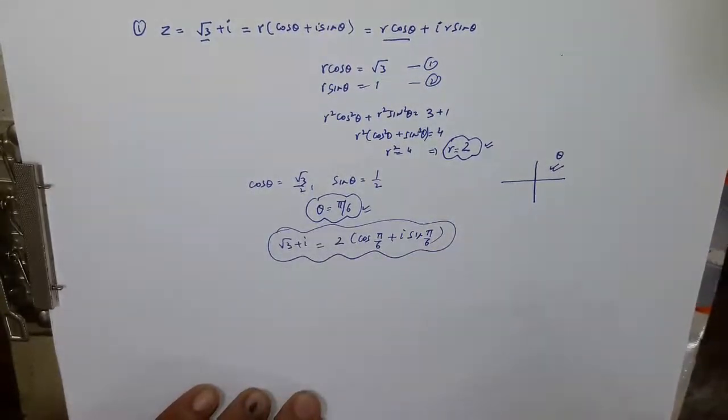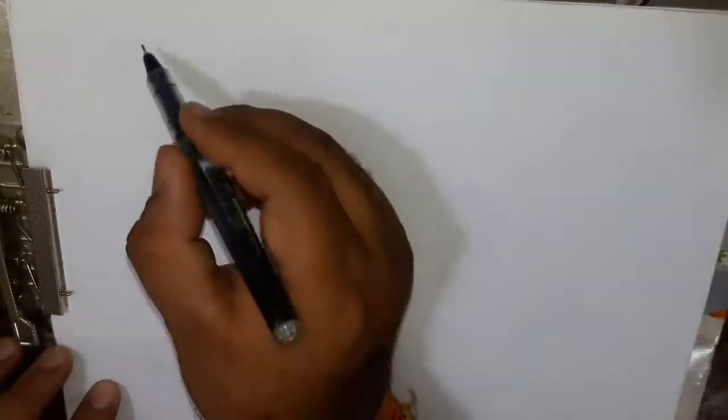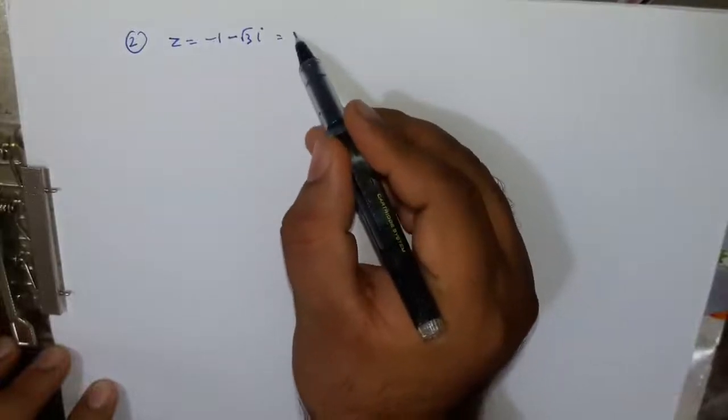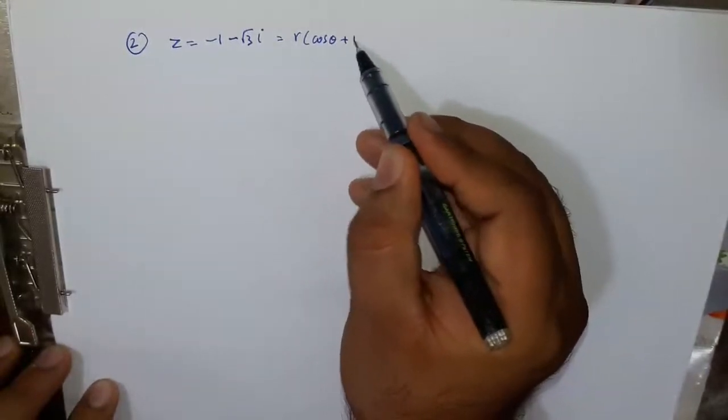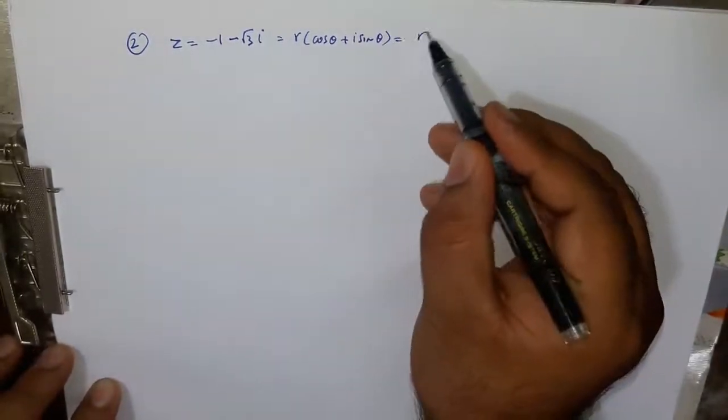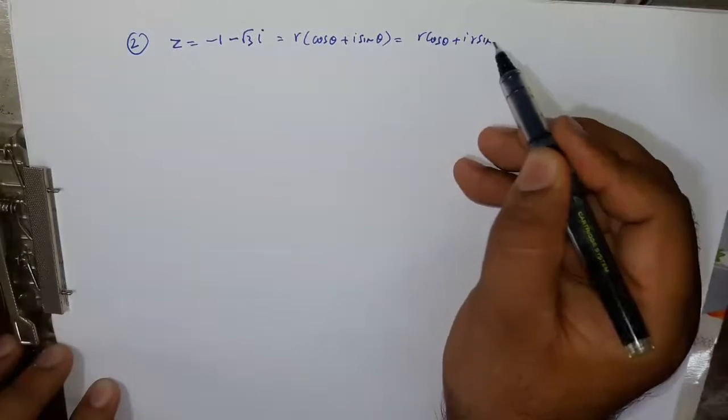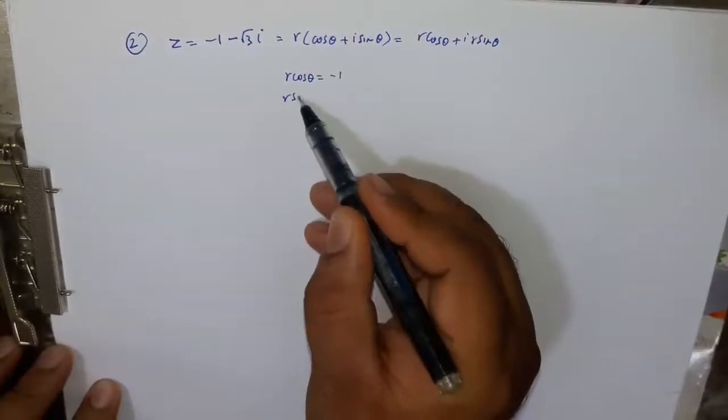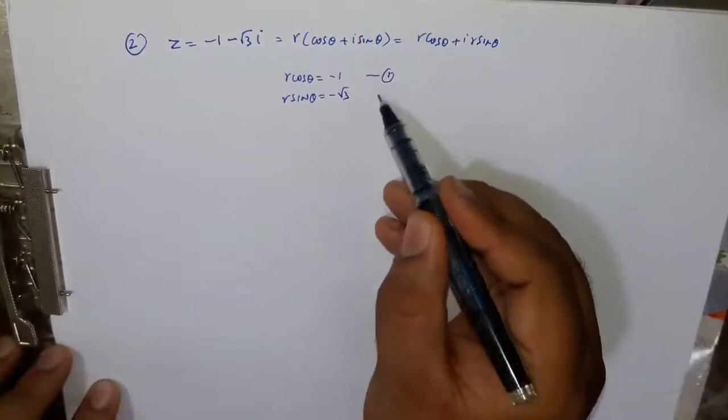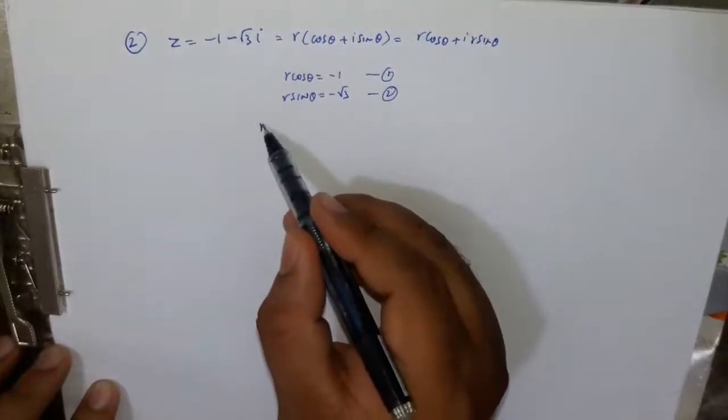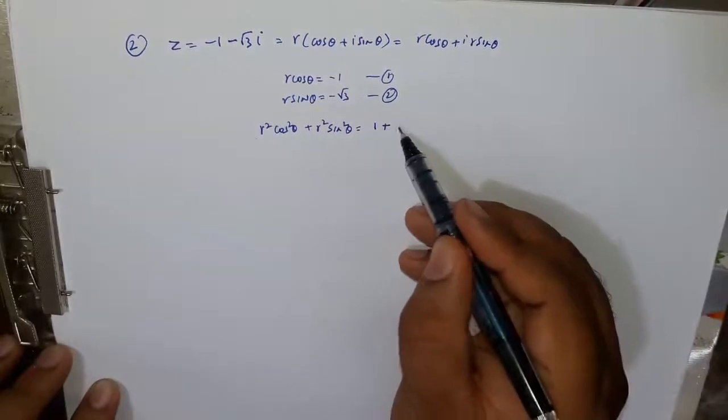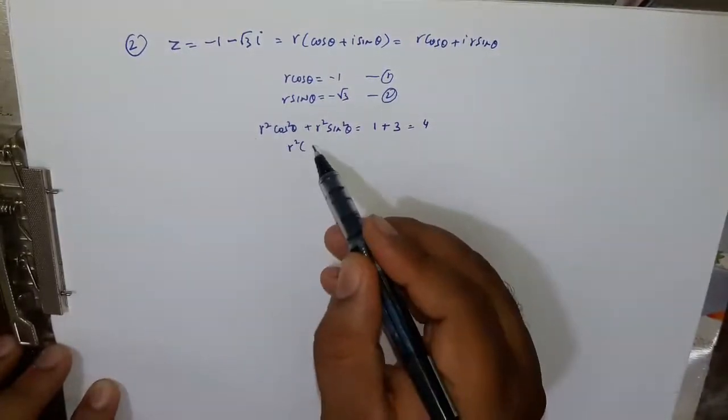More example lete hain polar form ka, jis mein hum a different complex number lenge. Let us say second question lete hain hum minus 1 minus root 3 iota. So again let karenge same approach jaisa pichle question mein kiya, iski polar form let karenge r cos theta plus iota sin theta. Isko open karenge to r cos theta plus iota r sin theta iski polar form hogi. Ab compare karenge to we have r cos theta real part minus 1 ke equal aayega or r sin theta jo hoga minus root 3 ke equal aayega.